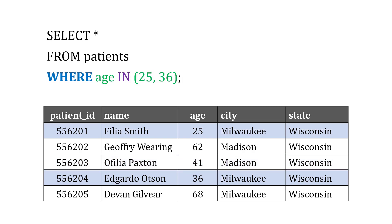Or we could try IN — maybe we want to provide a specific set of numbers. We could say WHERE age is IN 25 or 36, or you could give it additional numbers beyond that. It looks like just two patients are that age.